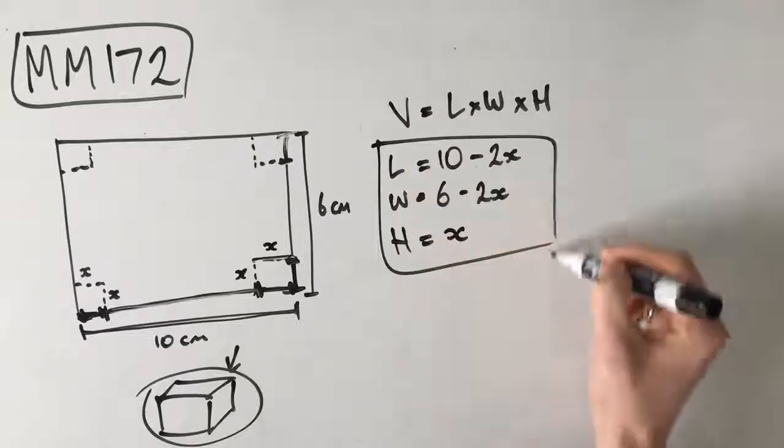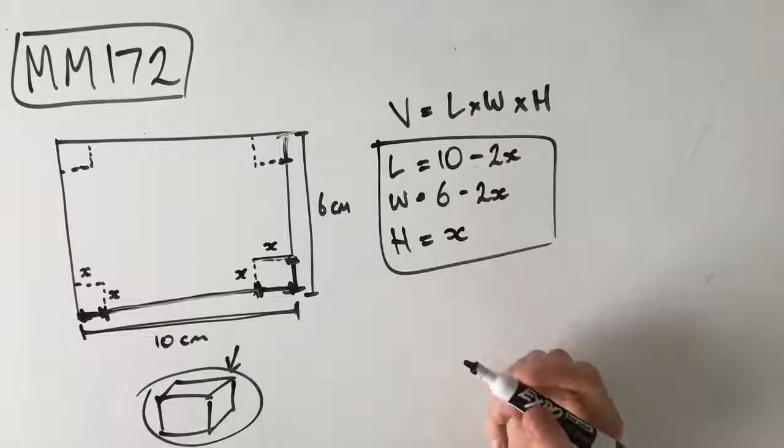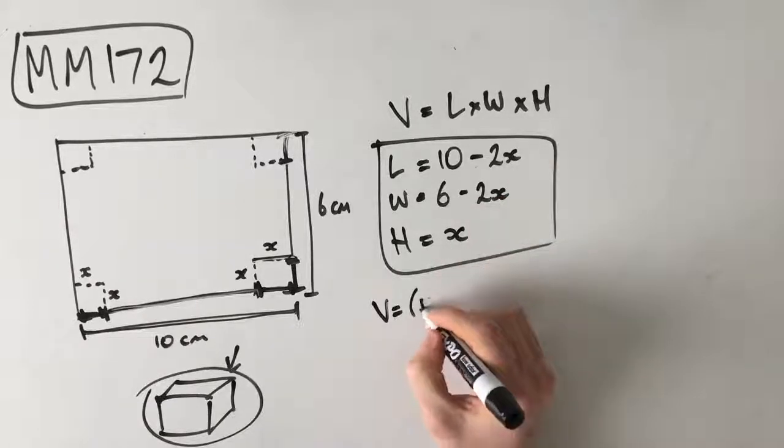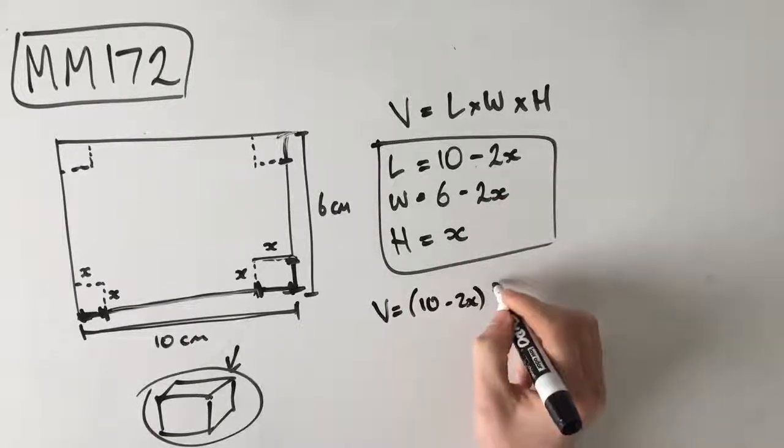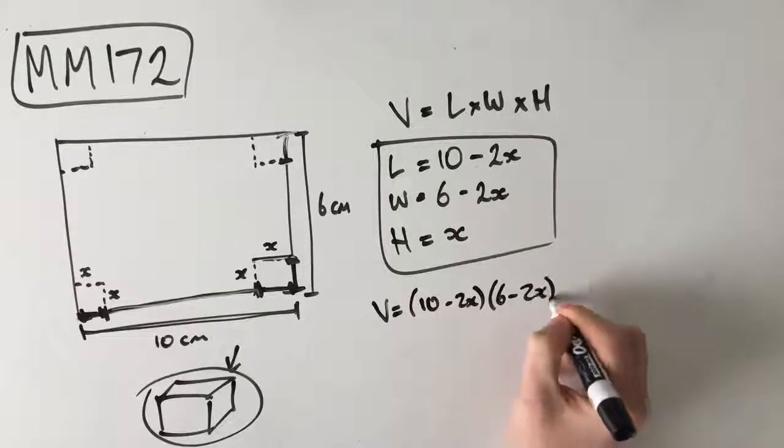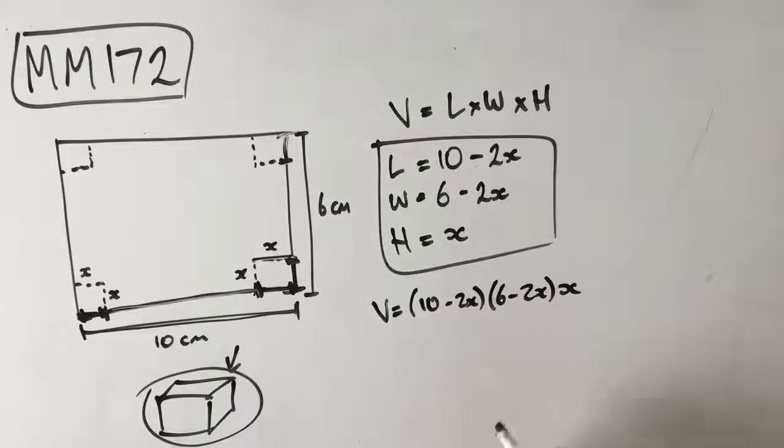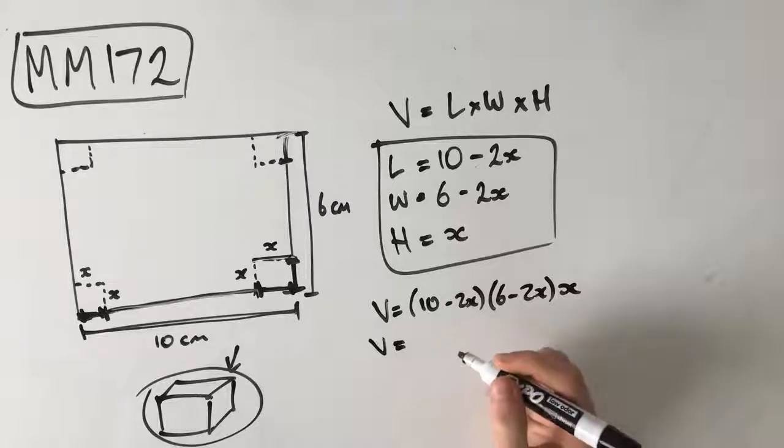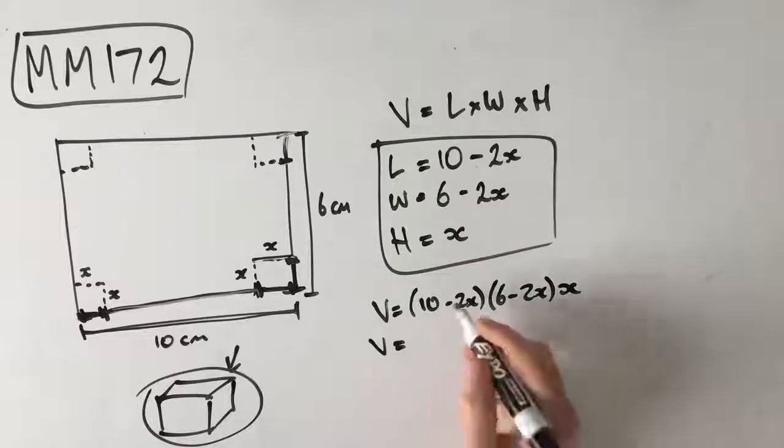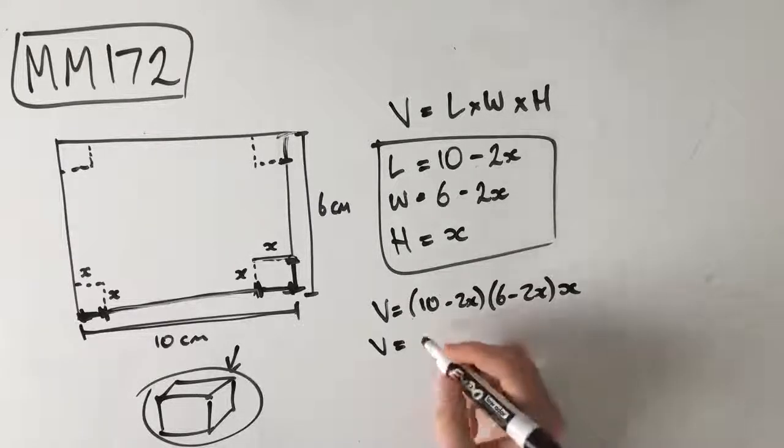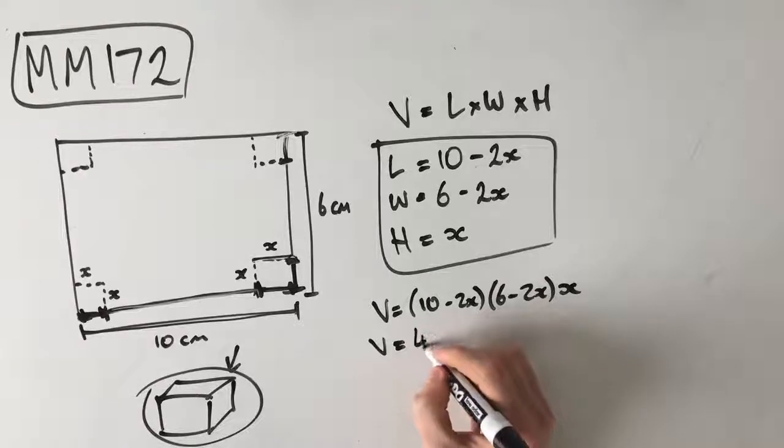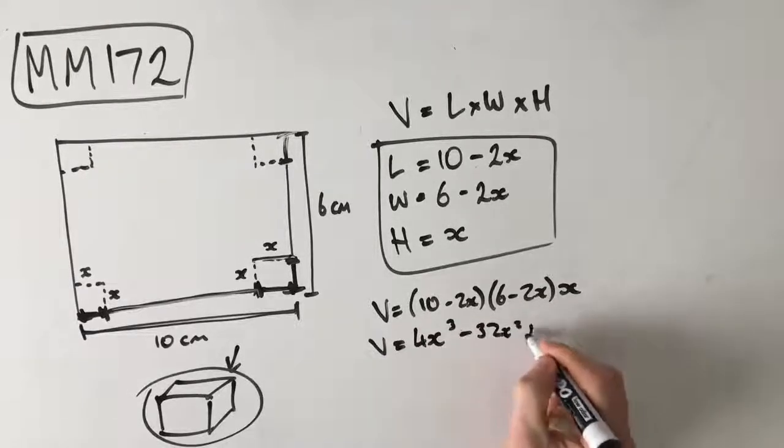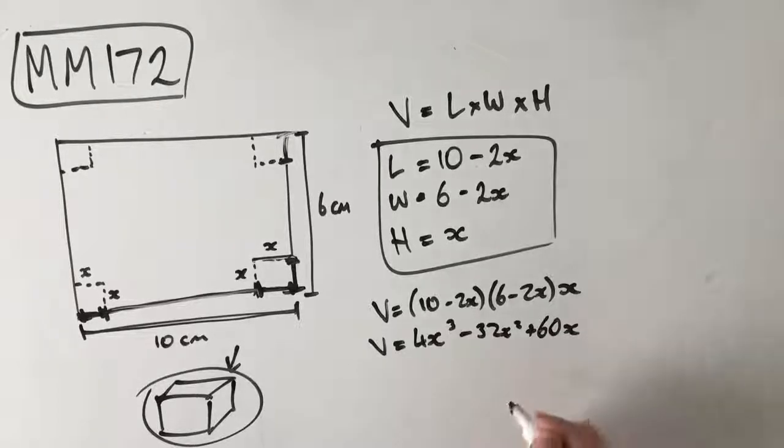We've got all of our dimensions here, which means that we can now create an equation for the volume. So our volume is equal to 10 minus 2x times 6 minus 2x times x. Remember, this is a CAS-enabled question, guys. So you can use your calculator here. And I would just chuck this in. You wouldn't even have to put this in the calculator, but I'll do it now just so that you can see. 4x cubed, take 32x squared, plus 60x. That's what we get there.